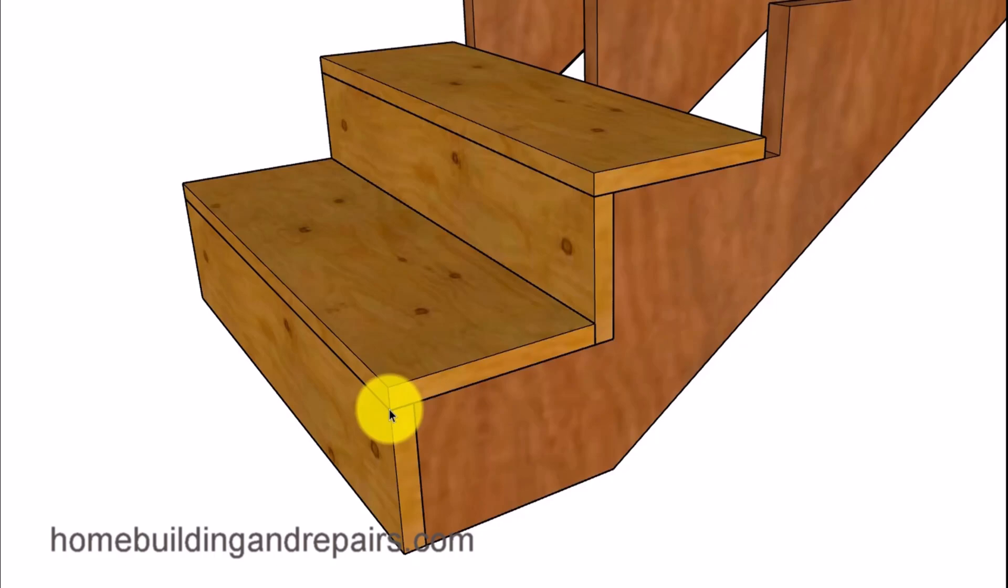And what I'd be suggesting is that you glue the top of the riser, glue the stringers, top of the stringers, and then glue the back of the tread or the front of the riser down here at the bottom. And then install your tread.